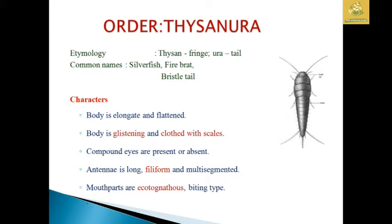The characteristics of these insects are: they have an elongated and flattened body, and their body is said to be glistening and clothed with scales. They have compound eyes which may be present or absent. The antennae are long and filiform and multi-segmented. The mouthparts are of the ectognathous type, which is a biting type.